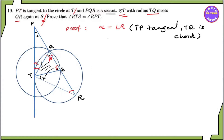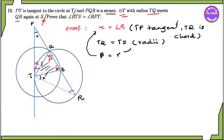TQ is equal to TQ — we have radii. Radii is the radius. We have beta equal to gamma. We have beta minus alpha. Beta minus alpha equal to gamma minus angle R.